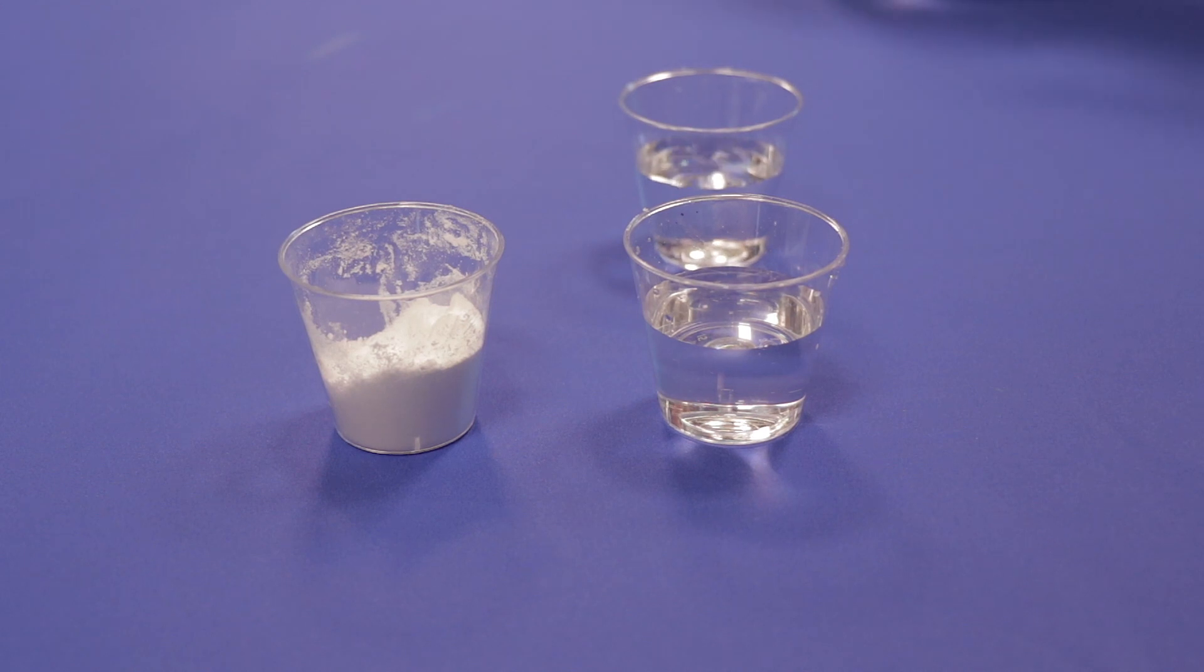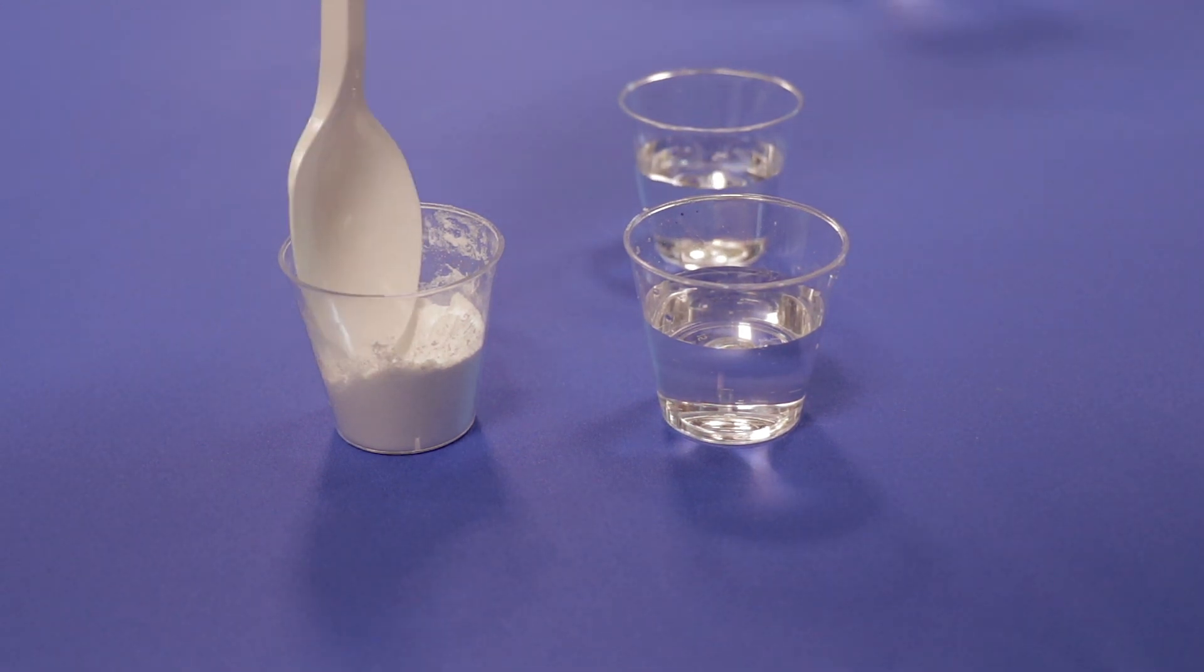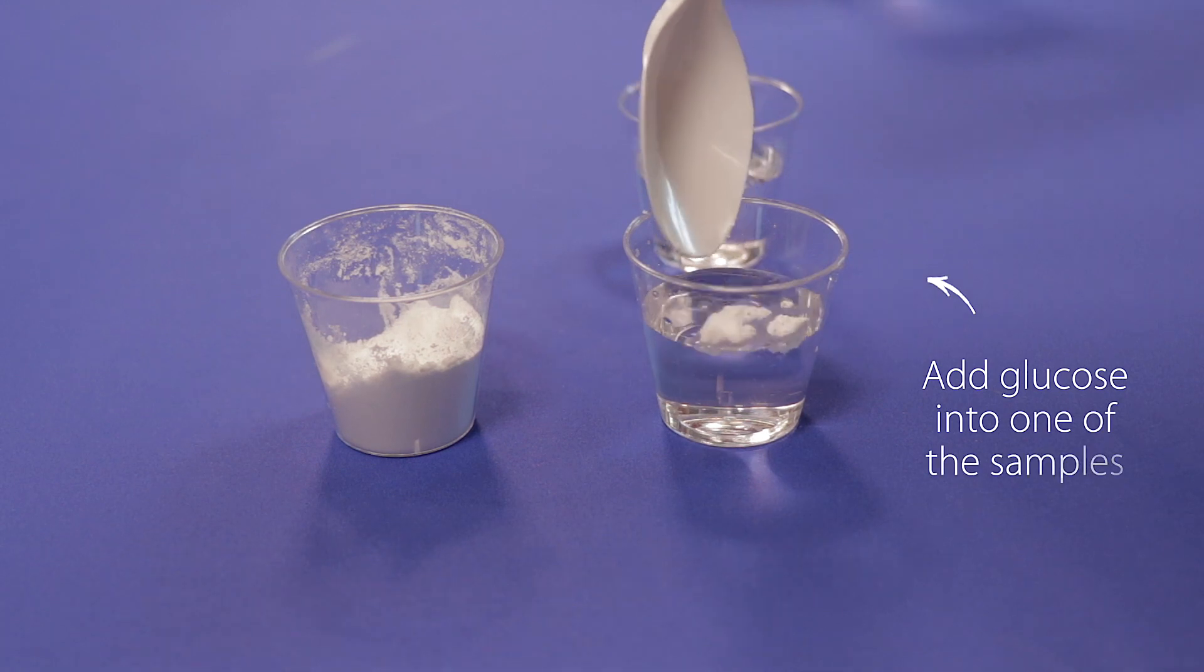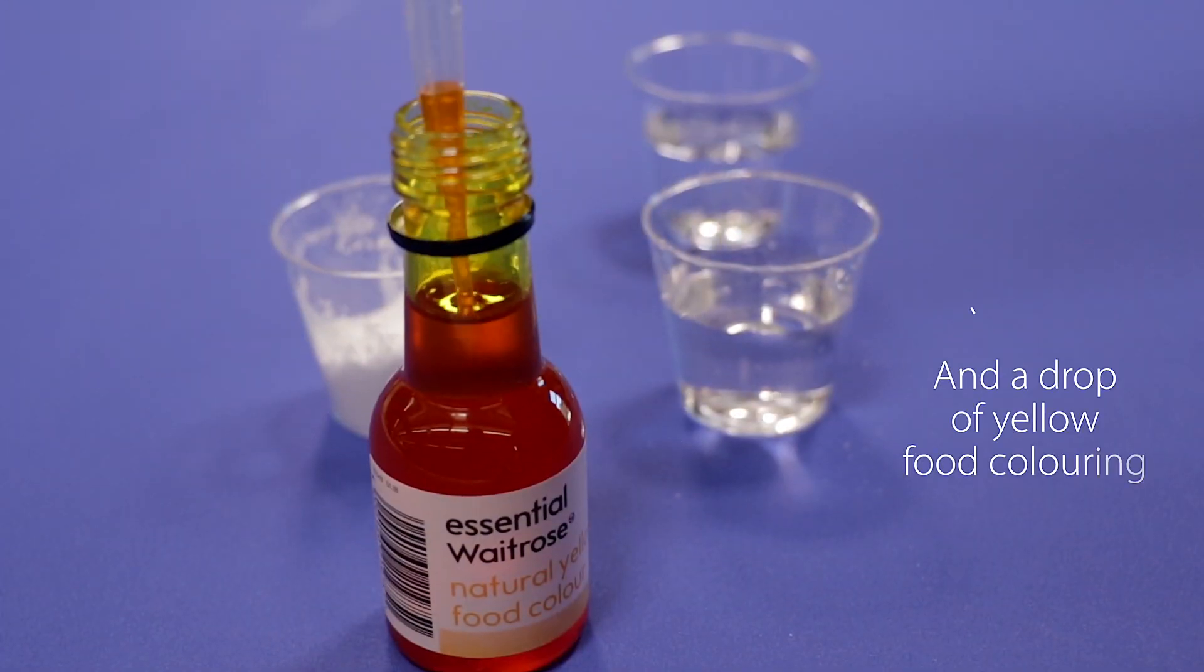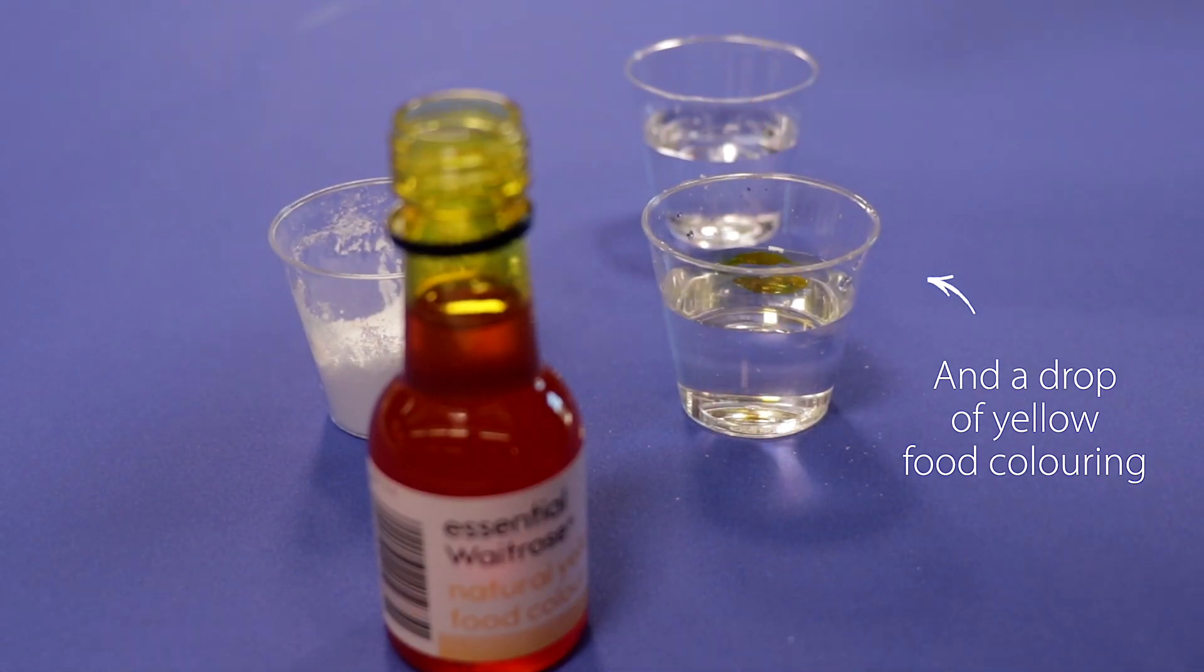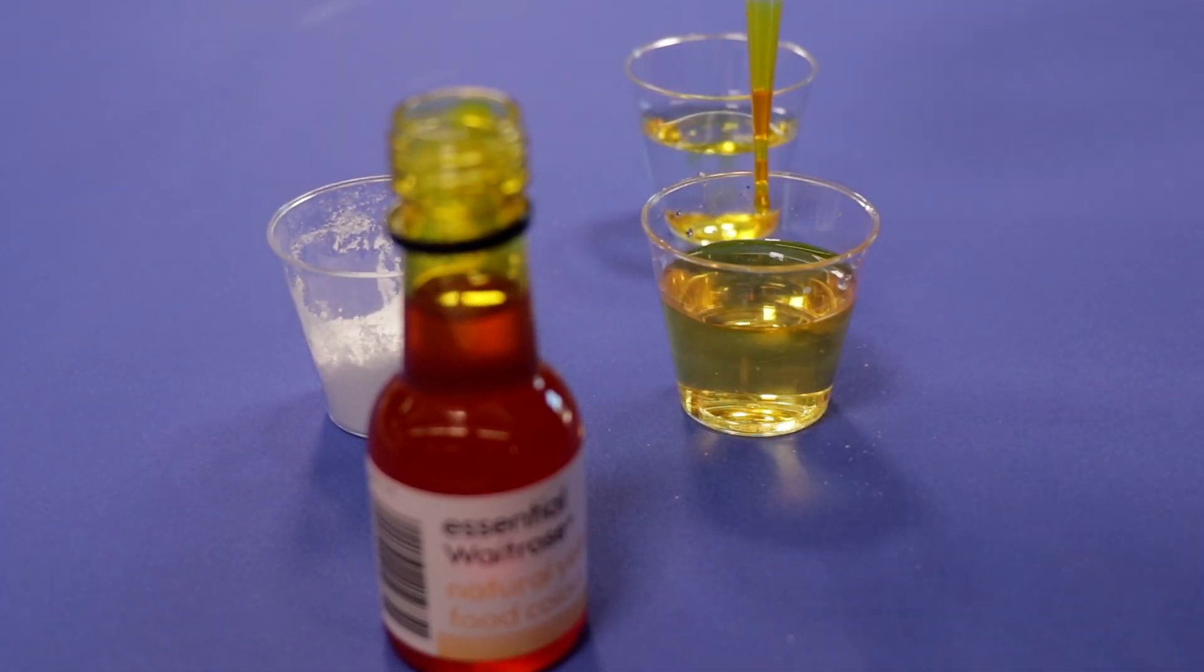First of all start by making up some pretend samples of urine with water, then add some glucose into one of the samples and a drop of yellow food colouring into a few depending on how many samples are being tested.